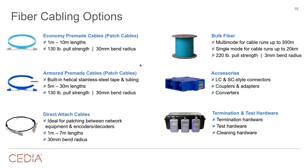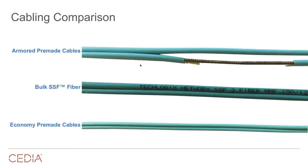Bulk fiber isn't much of a stretch — you can learn to terminate it effectively in about 10 minutes. Workshops make it easy to get your head around fiber cabling. Interestingly, premade cables are often less expensive than bulk fiber, which keeps people returning to them for theater and standard-length installations. Comparing cables is eye-opening — fiber is really compact and pliable. Even the armored premade cable with stainless steel helical-wrapped armoring has the same diameter as non-armored bulk fiber.